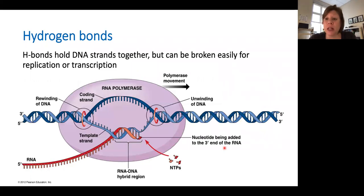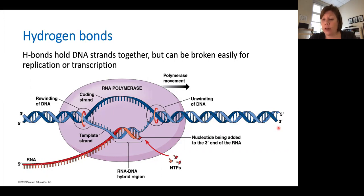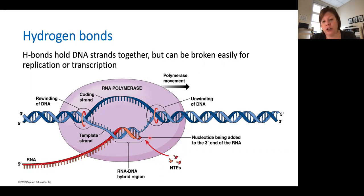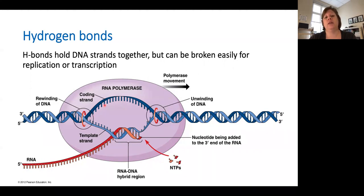Hydrogen bonds are really important for our nucleic acids — they hold our DNA strands together. Each of these bars over here represents two or three hydrogen bonds keeping the DNA base pairs together. But these hydrogen bonds can be easily broken. For example, RNA polymerase, as it moves down the DNA chain to create a new strand of RNA, is temporarily breaking the hydrogen bonds between the double helix of DNA, and then these hydrogen bonds can fold right back up together again.